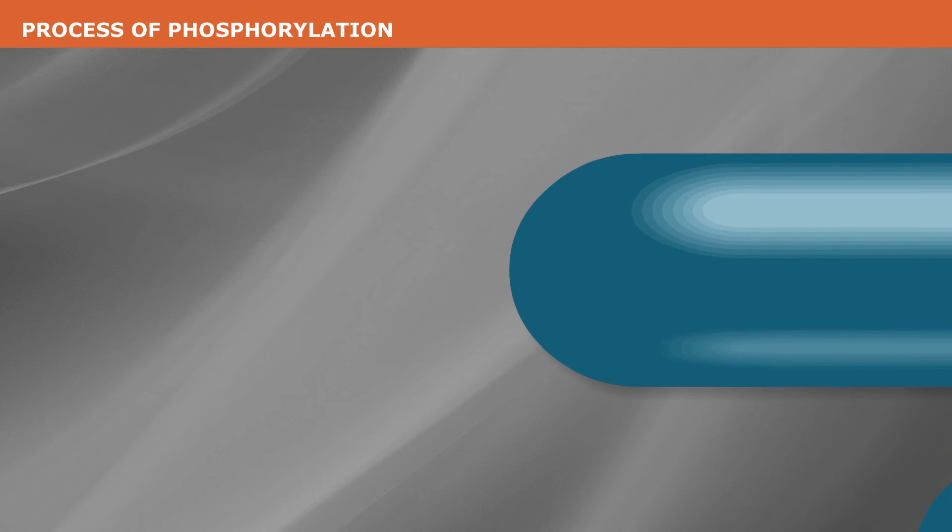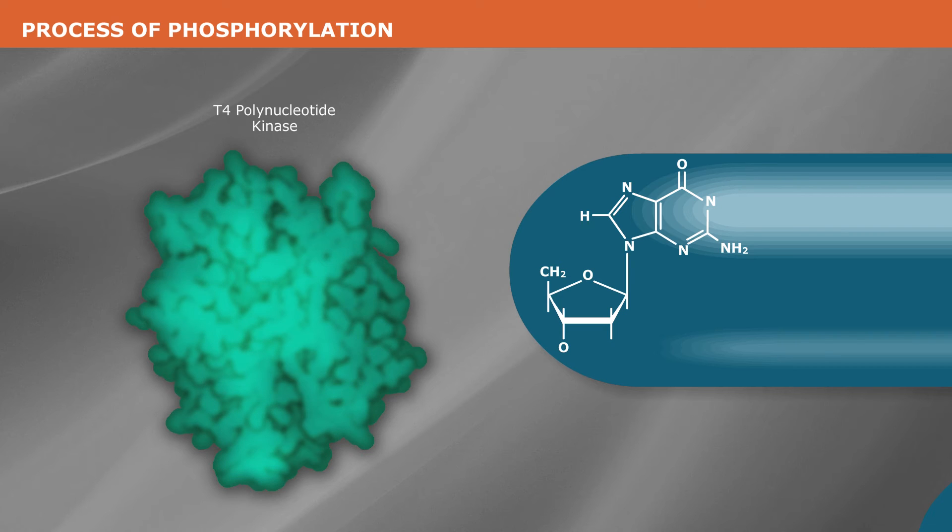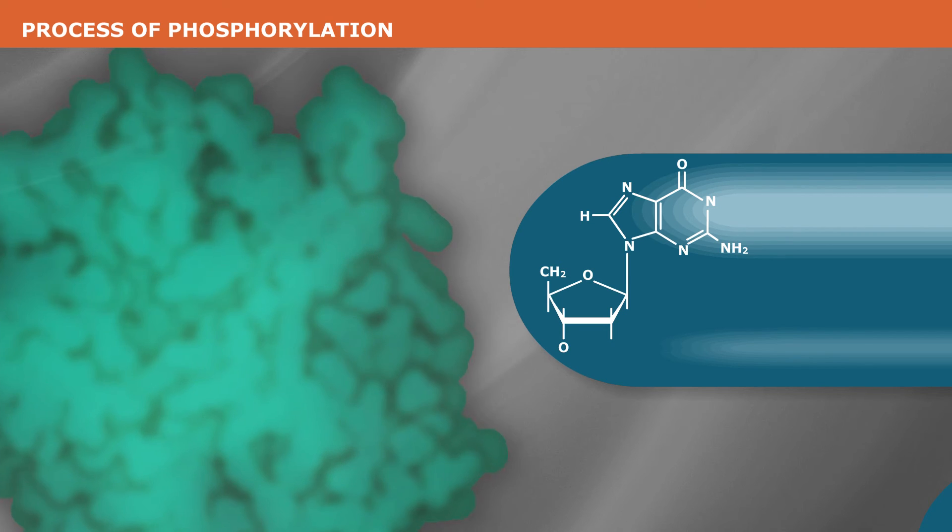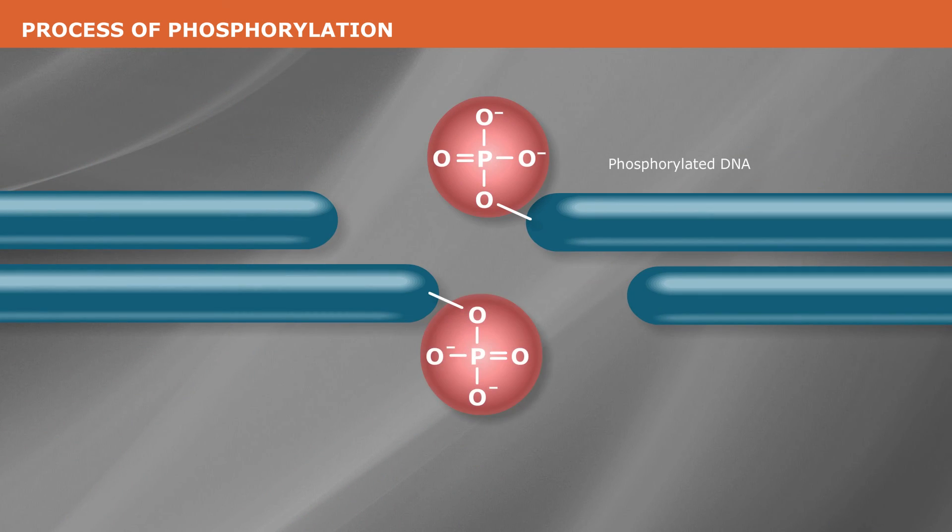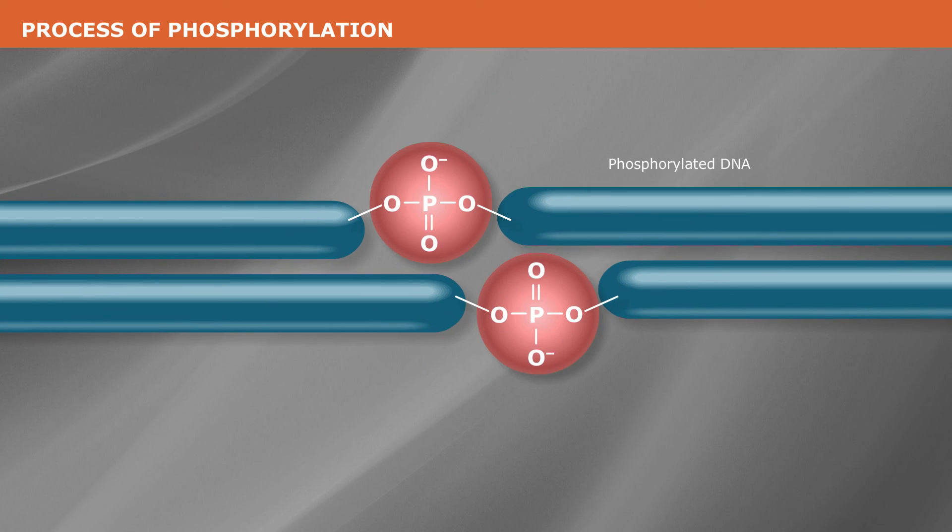In cloning protocols, phosphorylation is typically accomplished by T4-polynucleotide kinase, which transfers the terminal gamma-phosphate to a polynucleotide like DNA. The phosphorylated DNA is now ready for ligation.